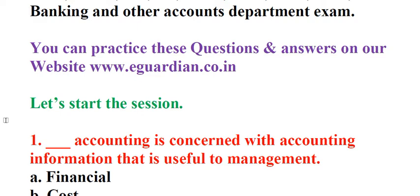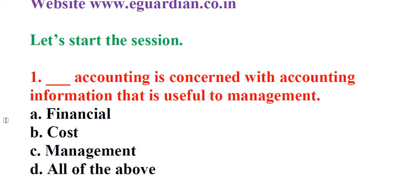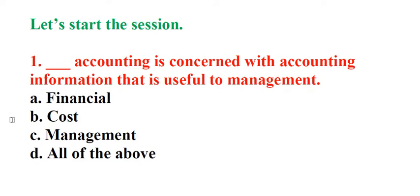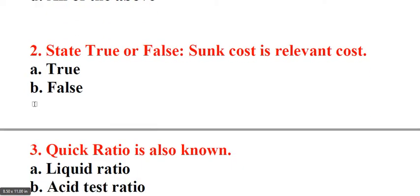Let's start the session. Question 1: Underscore accounting is concerned with accounting information that is useful to management. A. Financial, B. Cost, C. Management, D. All of the above. Answer: C. Management. Question 2: State true or false. Sunk cost is relevant cost. A. True, B. False. Answer: B. False.